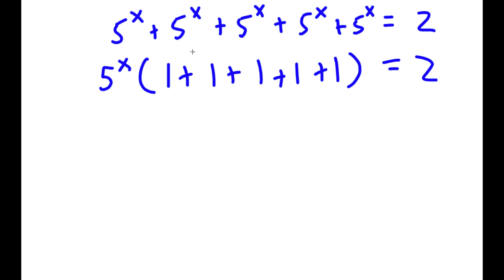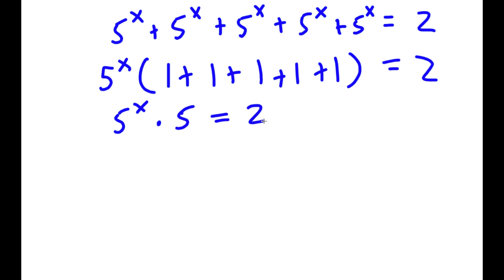So now, if I simplify what's in the parenthesis, I get phi to the power of x times: 1 plus 1 is 2, 2 plus 1 is 3, 3 plus 1 is 4, and 4 plus 1 is 5. So I get phi to the power of x times 5 is equal to 2.